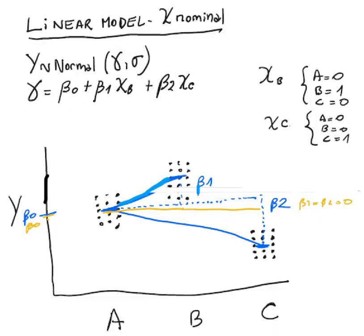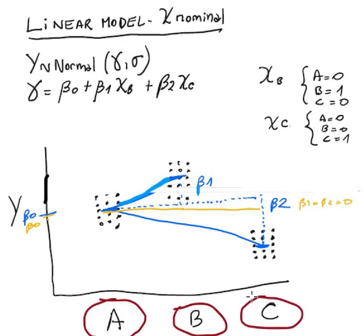We use the linear model for the case of a binary independent variable and there was no problem. We just transform the name of one value of the independent variable to zero and the other one to one, and we've got a linear model. But what happens when we have more than two values in the independent variable? So here, instead of having just A and B, we've got A, B, and C. Can we do a linear model? Yes, we can. We need to do a trick.